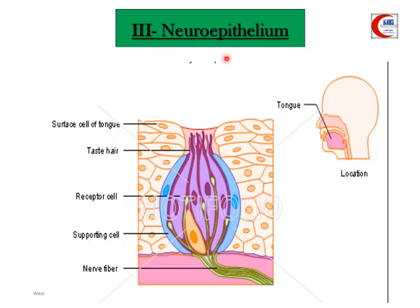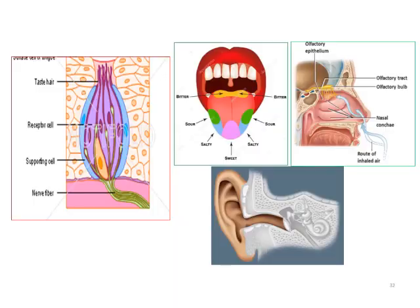Neuro epithelium is a type of epithelium that can receive sensations or stimuli. It is formed of three main cell types: supporting cells, sensory cells, and basal cells that act as stem cells. It is present in taste buds on the tongue, the olfactory epithelium lining the nose, and in the inner ear.